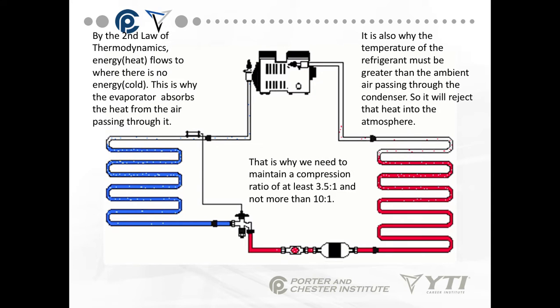On the outside system, we raise the pressure and raise the temperature so that heat will always flow out of the refrigerant into the air blowing across the condenser coil, rejecting the heat. That's why we need to maintain a compression ratio of at least 3.5 to 1 and not more than 10 to 1. The compression ratio basically describes the pressure coming in relative to the pressure going out.